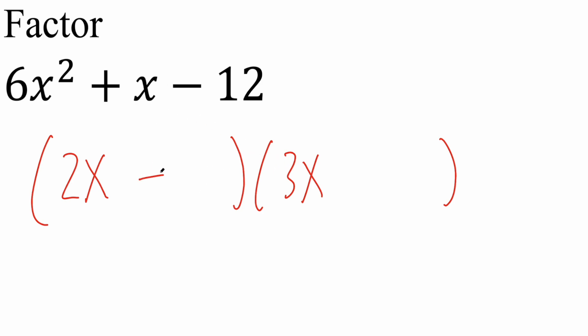Let's try plus 3 and negative 4. Again, 3 times negative 4 is negative 12. And let's try if this method works. 2x times negative 4 is negative 8x. 3x times 3 is 9x. 9x minus 8x is in fact positive x. So this right here is the final answer.